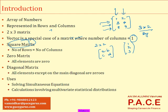Another important classification is the zero matrix. In a zero matrix, all the elements inside the matrix are zeros. It could be of any size — 1 by 1, 2 by 2, 2 by 3, or whatever size. It need not be a square matrix. When all the elements of a matrix are zero, we call it a zero matrix.